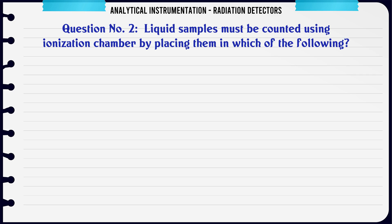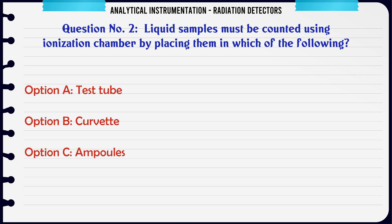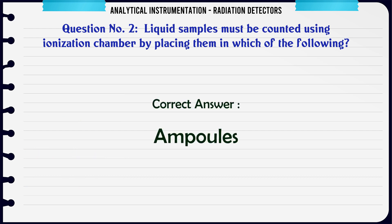Liquid samples must be counted using ionization chamber by placing them in which of the following? A. Test tube. B. Cuvette. C. Ampules. D. Flask. The correct answer is Ampules.